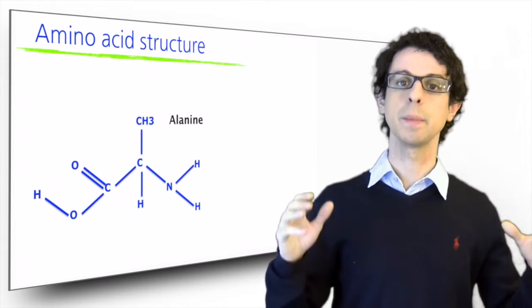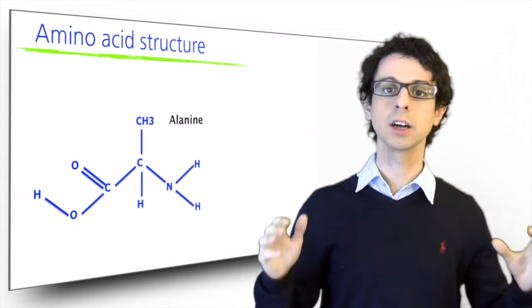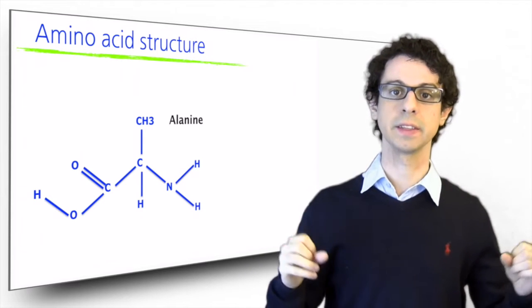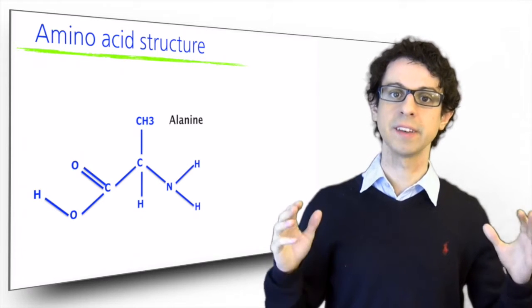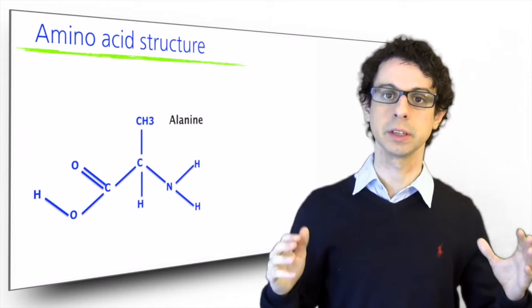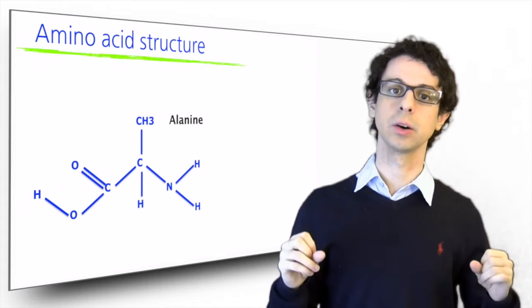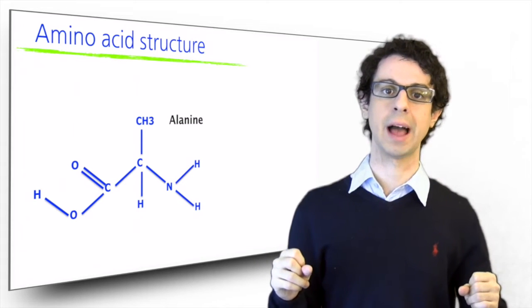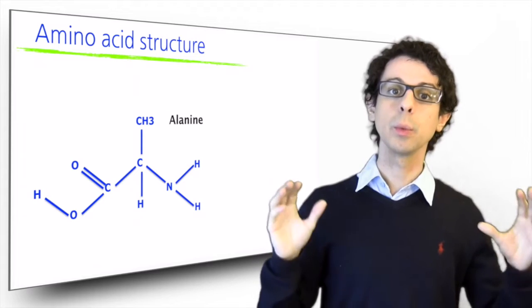Two amino acids, methionine and cysteine, contain atoms of sulfur in their side group. Three amino acids — valine, leucine, and isoleucine — have a branched side group. These are called the branched chain amino acids.